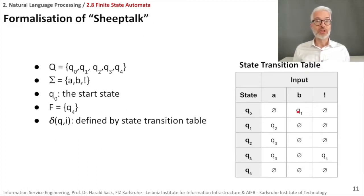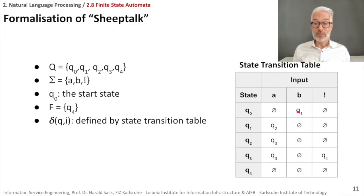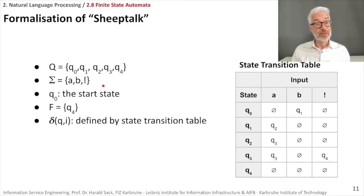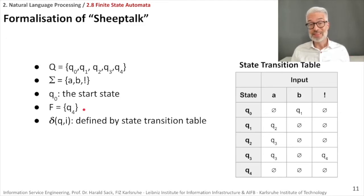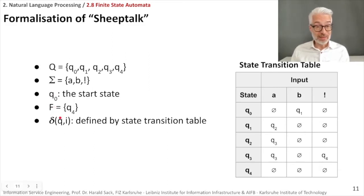Let's formalize the sheep talk model. We have Q = {q0, q1, q2, q3, q4}, four states. The input alphabet Σ = {a, b, !}. The start state is q sub 0. We have only one final state, q sub 4, so F = {q4} — keep in mind that even though it's only one state, F is always a set. Then we define δ, the transition function, with the help of a state transition table.